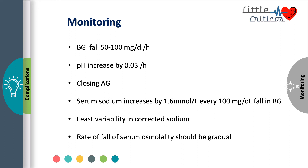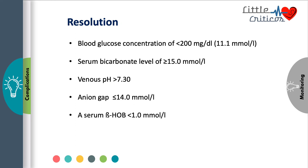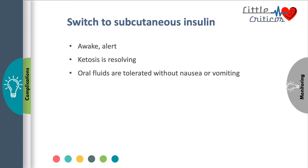Resolution of DKA is defined as: blood glucose less than 200 mg/dL, bicarbonate more than 15, venous pH more than 7.3, closed anion gap less than 14, and serum beta-hydroxybutyrate less than 1 mmol per liter. We can switch to subcutaneous insulin once these endpoints are achieved, the child is awake and alert, and is able to tolerate oral feeds without nausea or vomiting. Subcutaneous insulin must be started at least 30 minutes before stopping intravenous insulin.